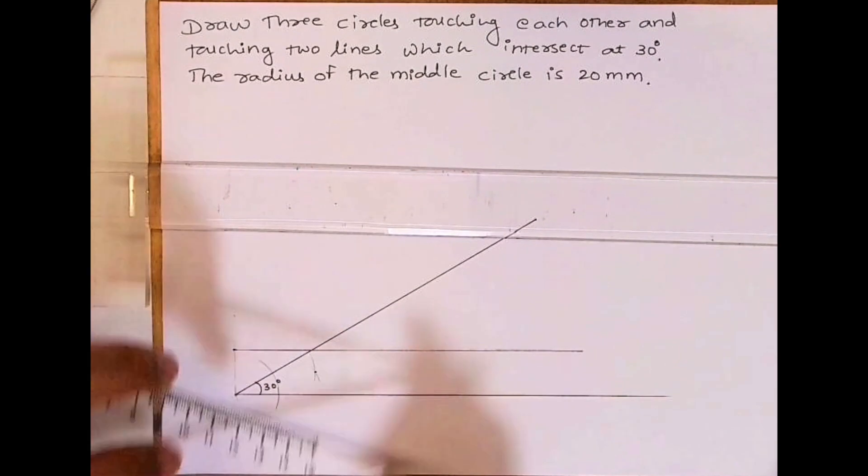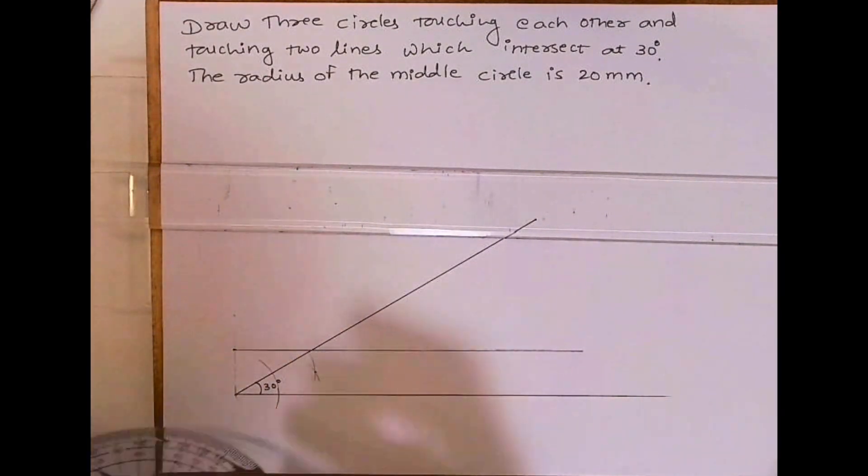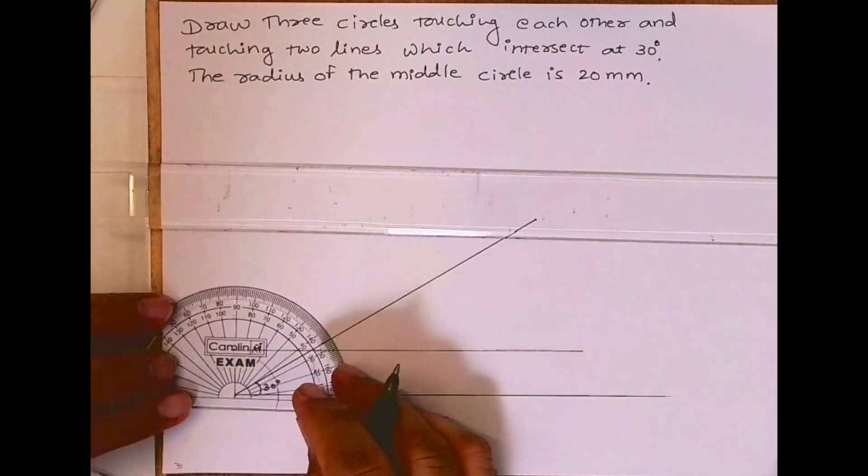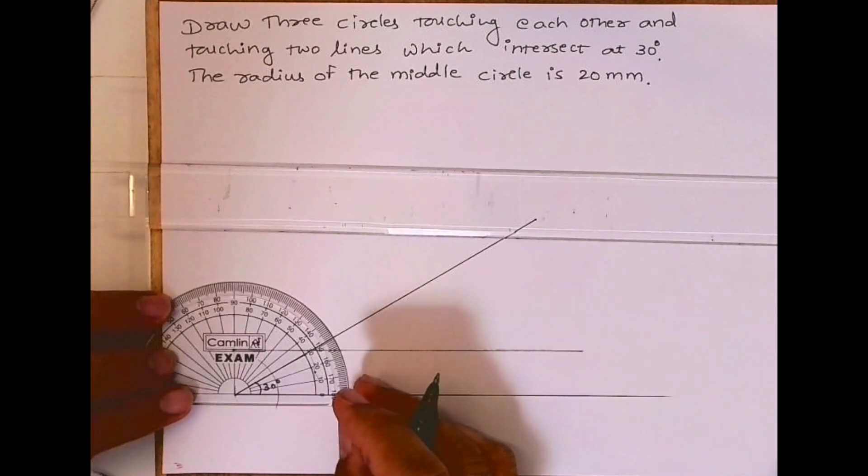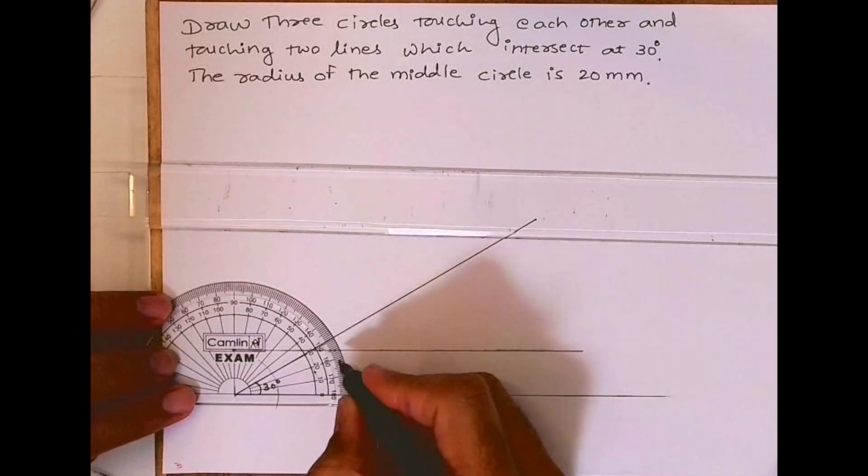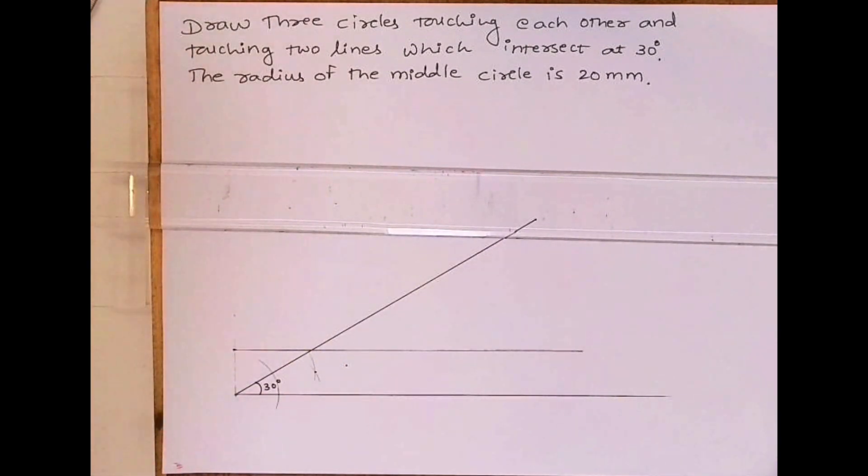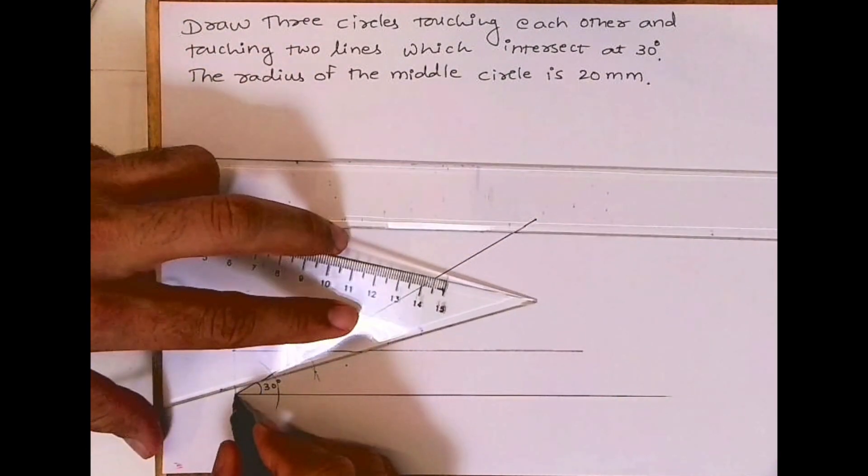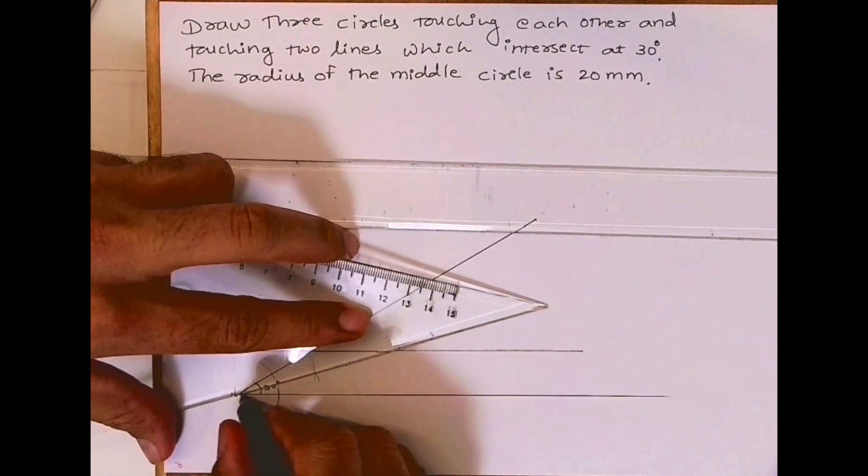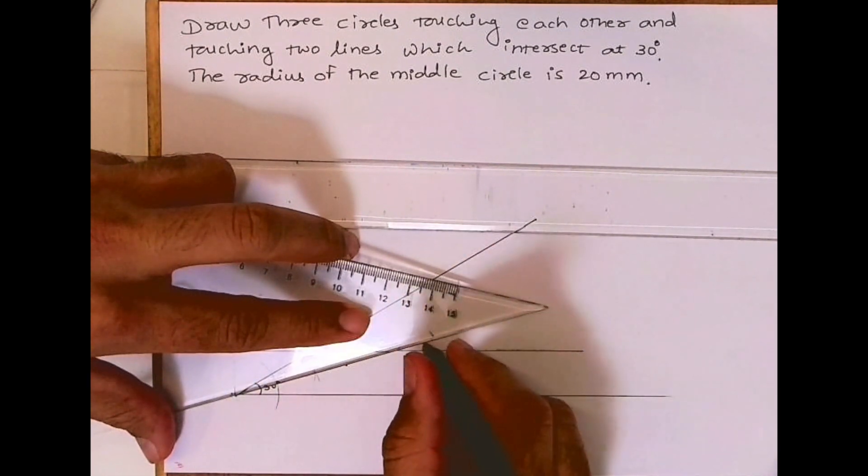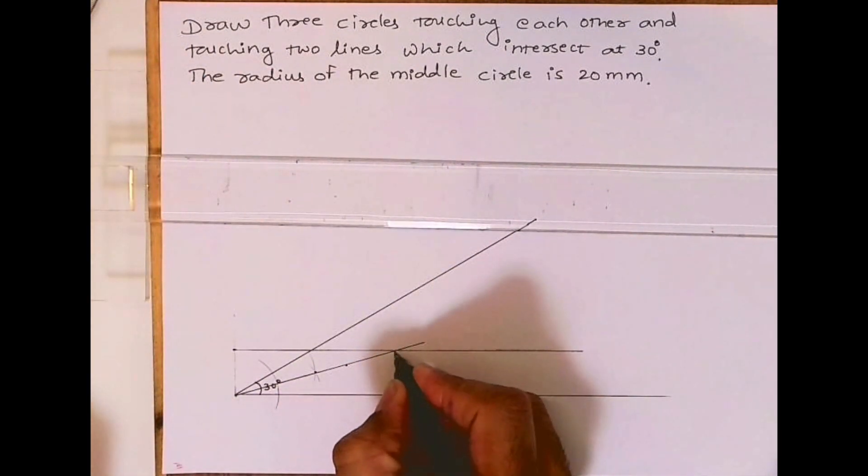When you bisect 30 degrees, we know it is 15 degrees, right? So we can mark with a protractor also, that is for cross-checking. See, it is coming the same. Wherever it will cut, that is O2.